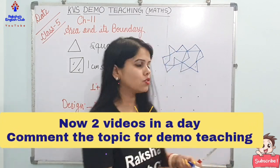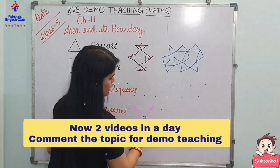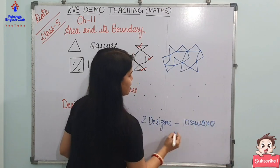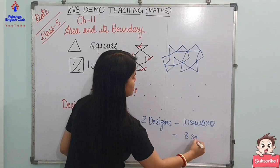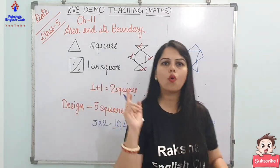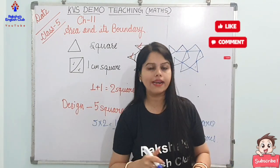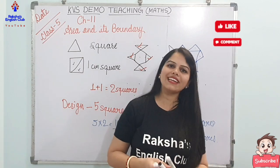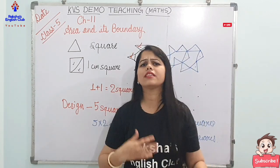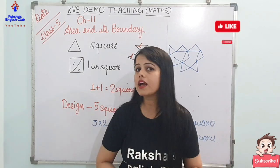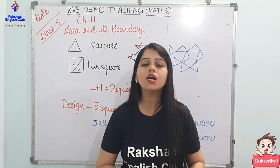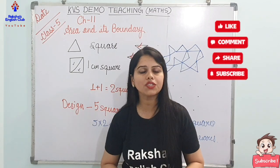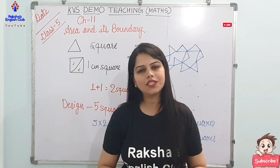So this is your homework — you have to make two designs. One design should have 10 squares and another design should have 8 squares. Tomorrow I am going to see who has made the beautiful design, and then we are going to make that same design on the ground tomorrow. Have you liked today's class? Very nice. In this way, with interaction and practical examples, we can make our class more interactive. Don't forget to like, share, and subscribe to my channel, Raksha's English Club. Press the bell icon for upcoming videos — stay tuned, thank you.